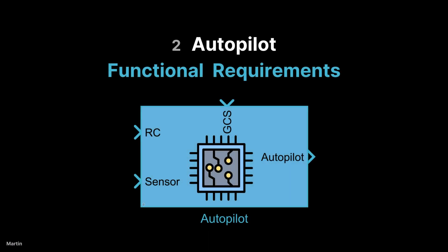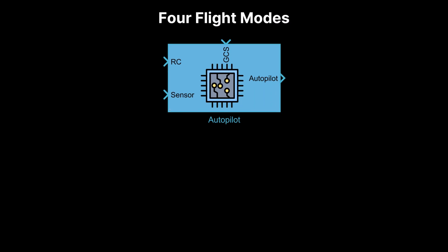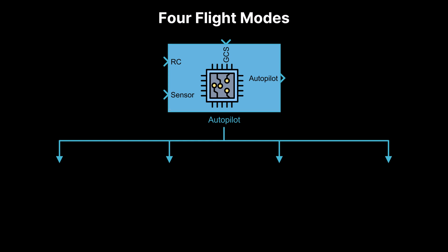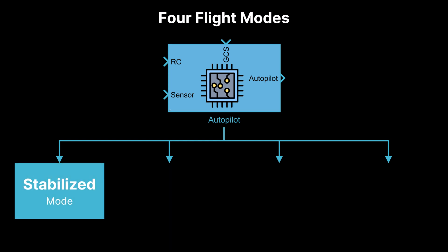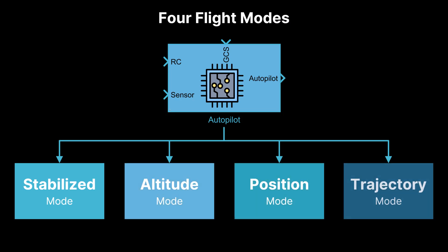In this session, we will focus on the functional requirements of an autopilot. There are multiple flight modes of the autopilot of a quadcopter. In this tutorial, we will focus on these four: stabilized mode, altitude mode, position mode, and trajectory mode. Each mode offers different levels of autonomy and pilot control, allowing flexibility for various applications.